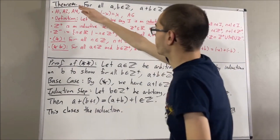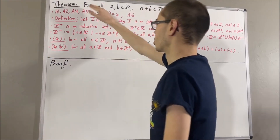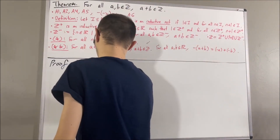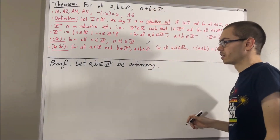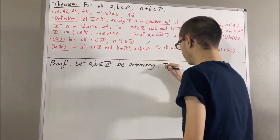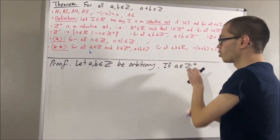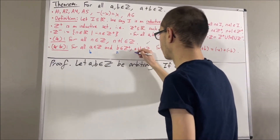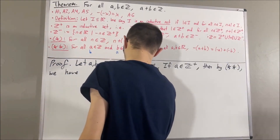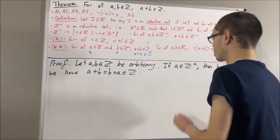Now let's move on to proving the main theorem. Since we're trying to prove a statement about every two integers, we start with two arbitrary integers, call them a and b. The goal is to show that a plus b is an integer. We're going to split this up into several cases. First, what happens if a is a positive integer? Since b is an integer, we can apply star-star replacing a with b and b with a, so b plus a is an integer. By the commutative law, axiom 1, b plus a equals a plus b. So that covers the case where a is a positive integer.